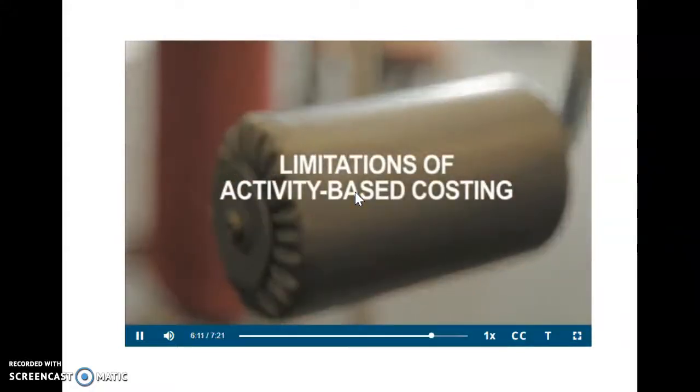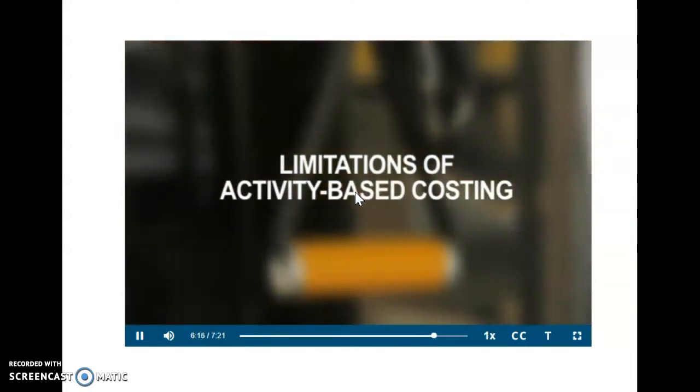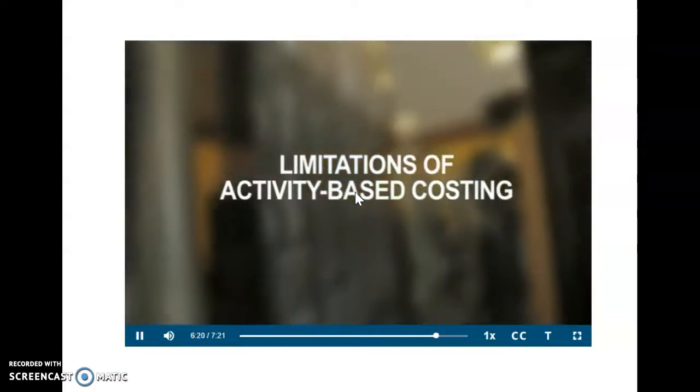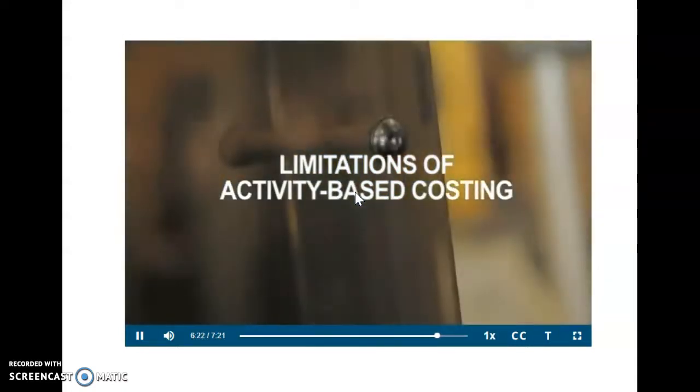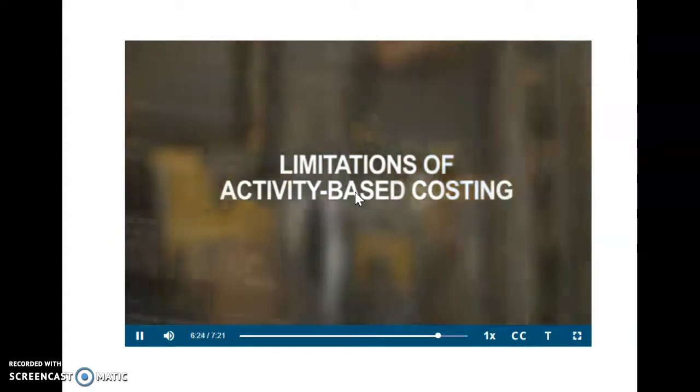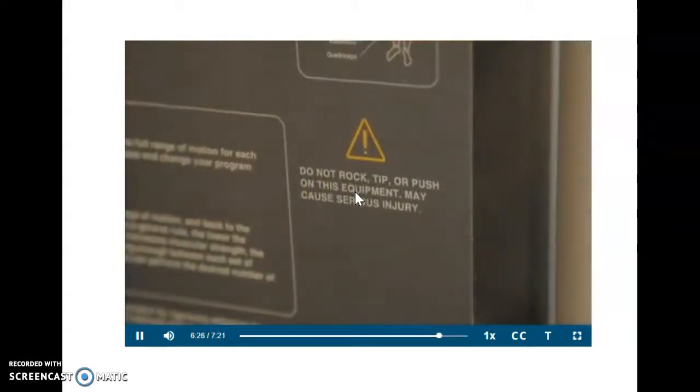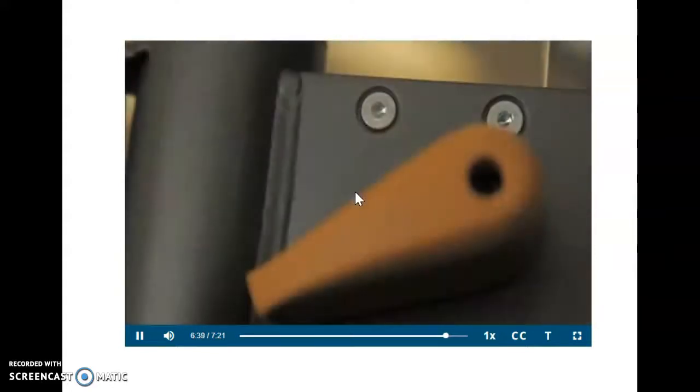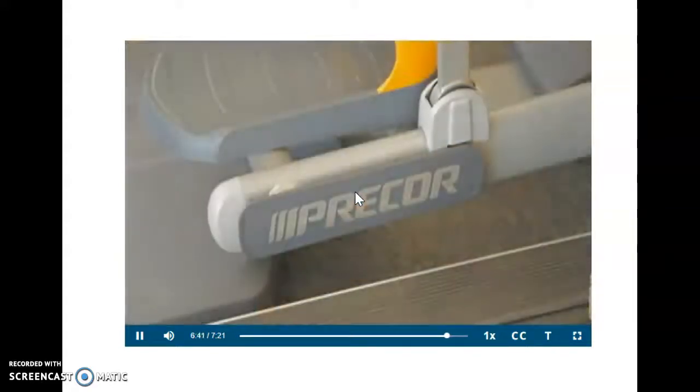Activity-based costing is not without limitations. It can be expensive. Multiple activity centers require added analysis, and there are still some costs which continue to be allocated arbitrarily. But if a company has product lines that differ greatly in volume or complexity, if overhead costs constitute a significant portion of total costs, or if managers are ignoring data from an existing system, chances are that ABC would be the superior cost system for a company.